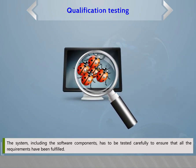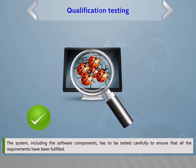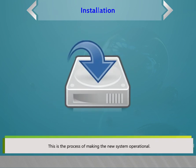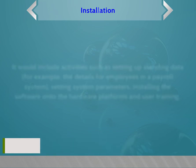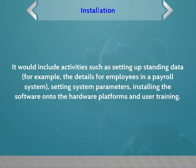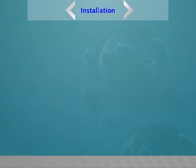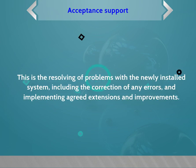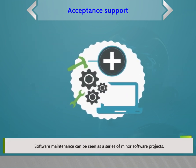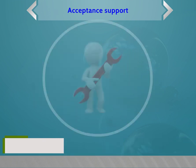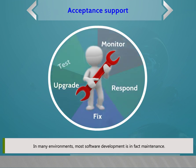In qualification testing, the system including the software components has to be tested carefully to ensure that all requirements have been fulfilled. Installation is the process of making the new system operational, including setting up standing data, setting system parameters, installing software onto hardware platforms, and user training. Acceptance support involves resolving problems with a newly installed system, including correction of errors and implementing agreed extensions. Software maintenance can be seen as a series of minor software projects.